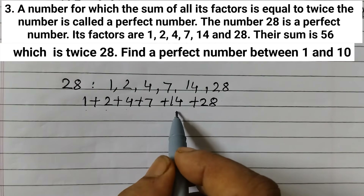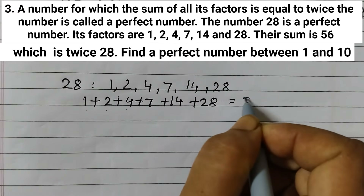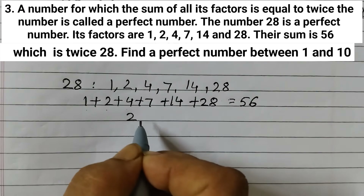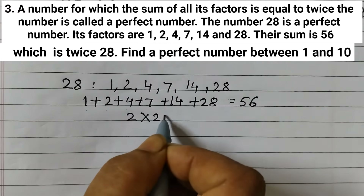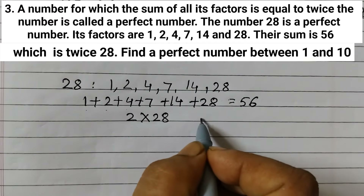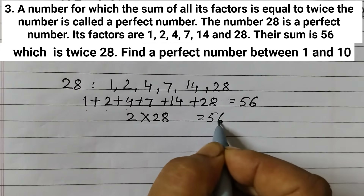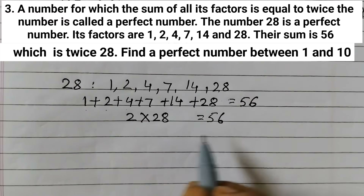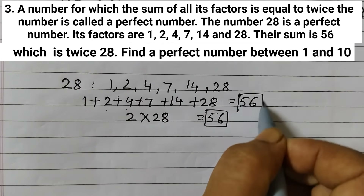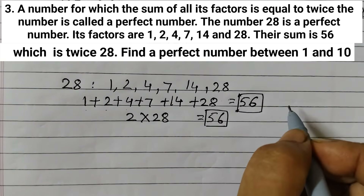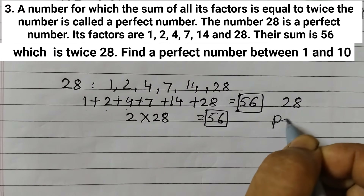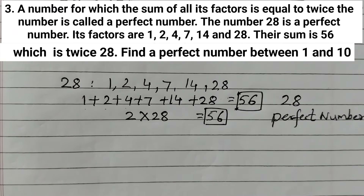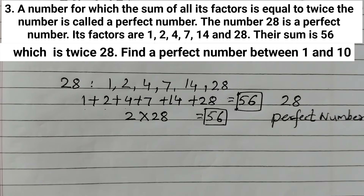When we add up all the factors: 1+2=3, 3+4=7, 7+7=14, 14+14=28, 28+28=56. The sum is 56, and twice the number is 2×28=56 as well. Since the sum of all factors equals twice the number, 28 is a perfect number. Now let's find a perfect number between 1 and 10, starting with 2.